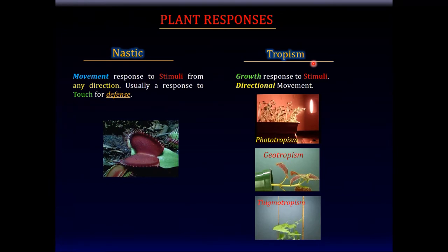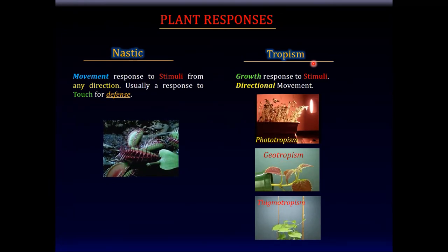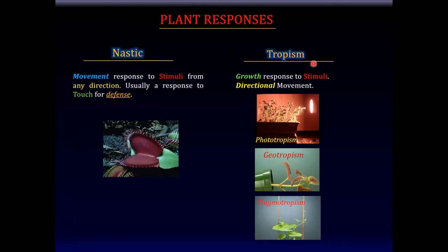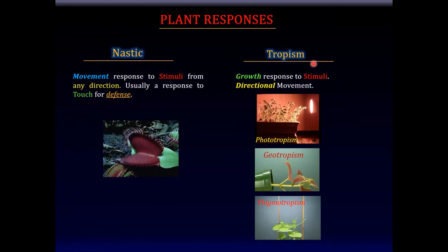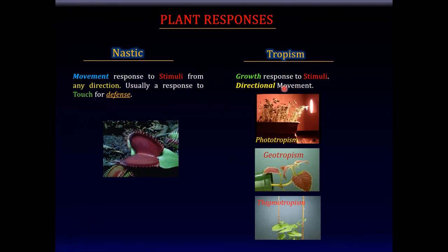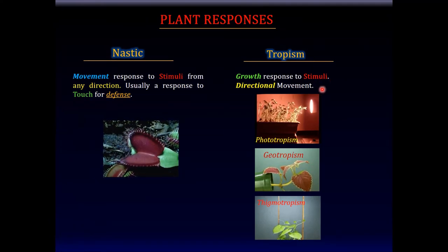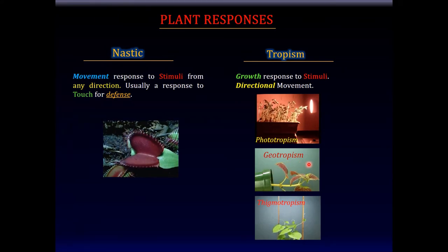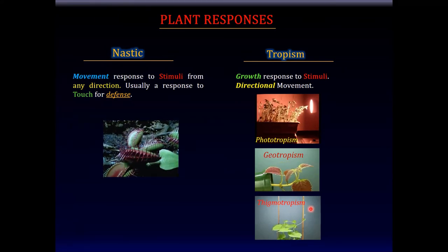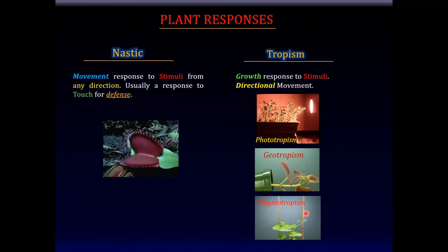In review, there are two types of plant responses. Nastic responses are movement responses to stimuli — reversible responses, usually to touch. Tropisms, on the other hand, are growth responses to stimuli and involve directional movement. Examples given were phototropism (response to light), geotropism (plant response to gravity), and thigmotropism (plant response to touch).